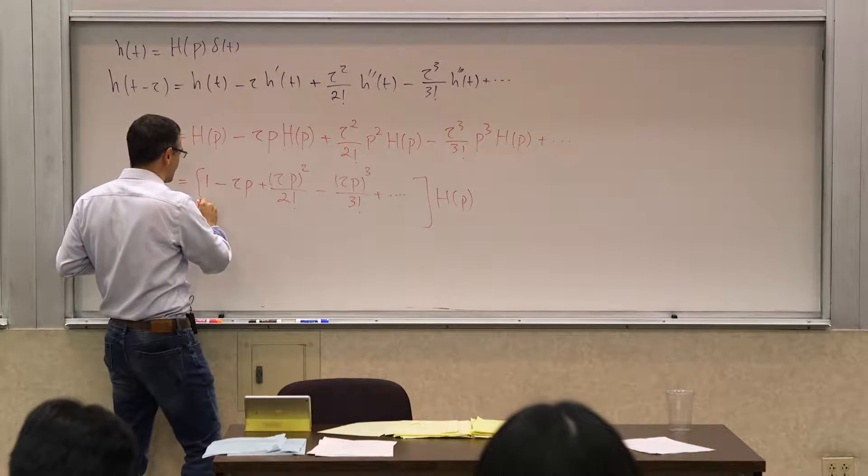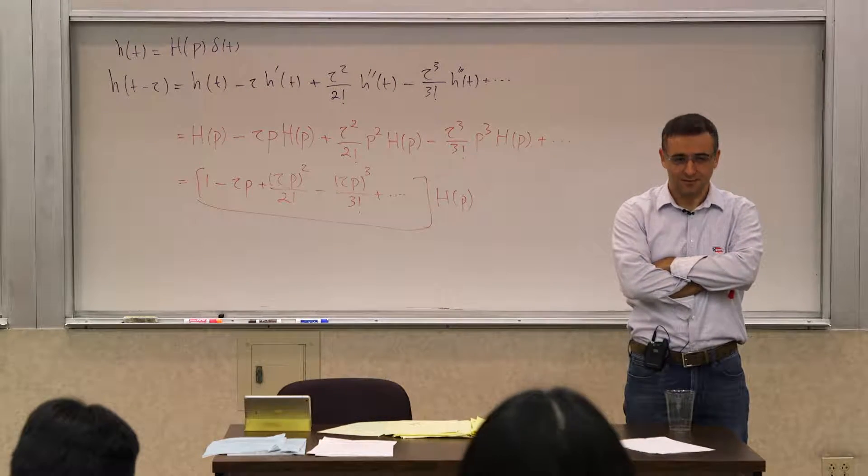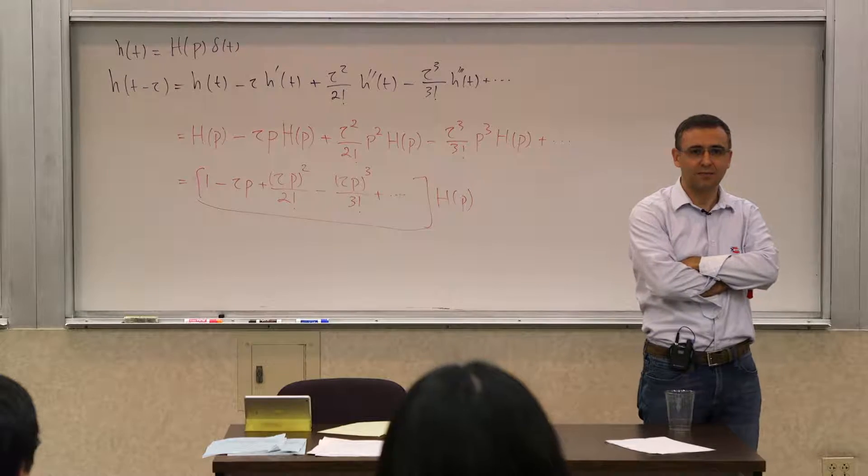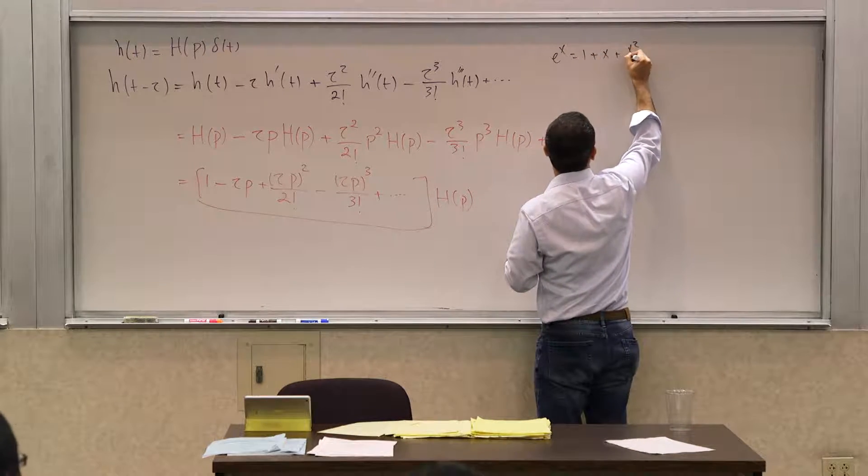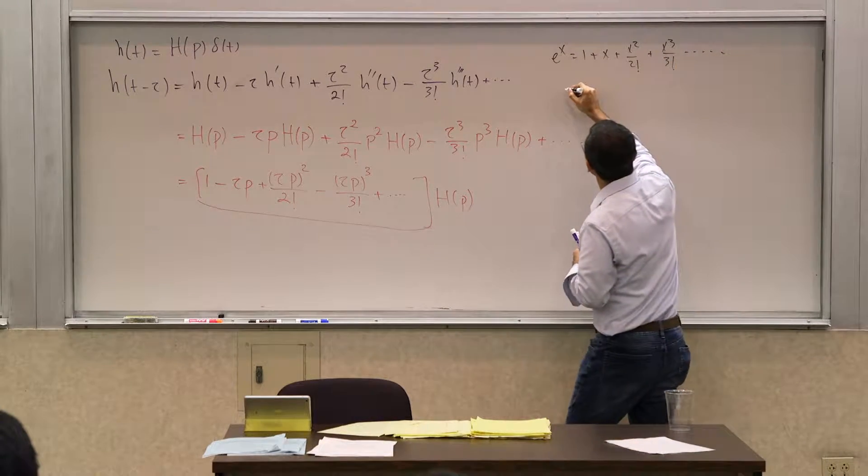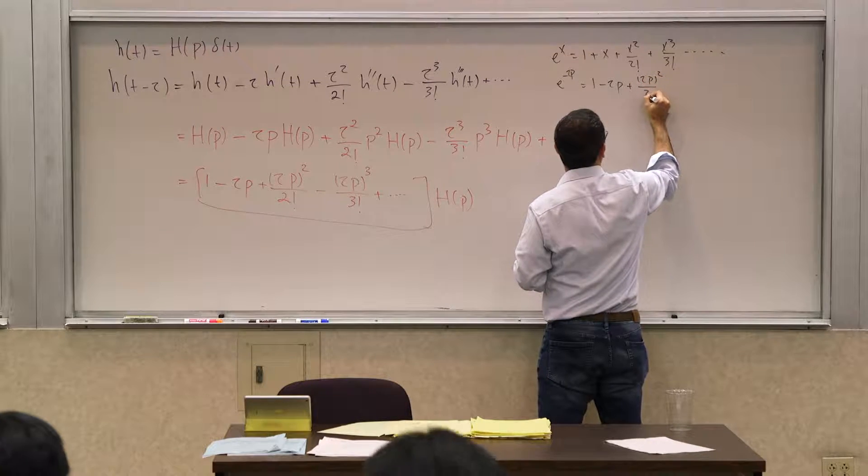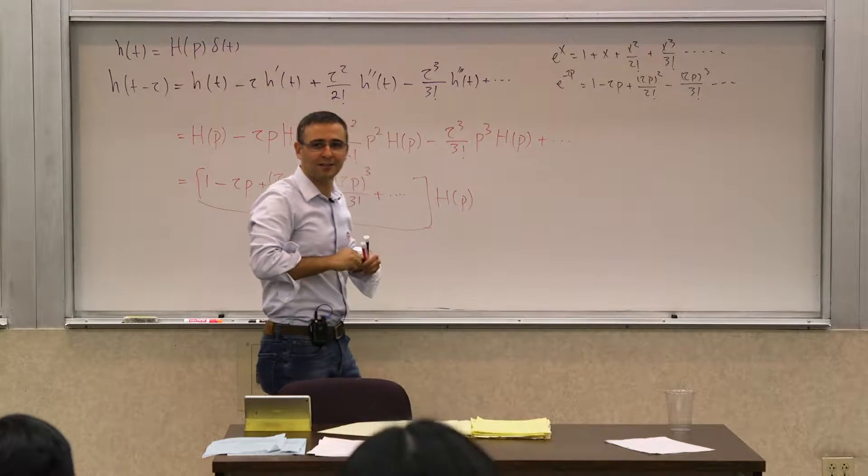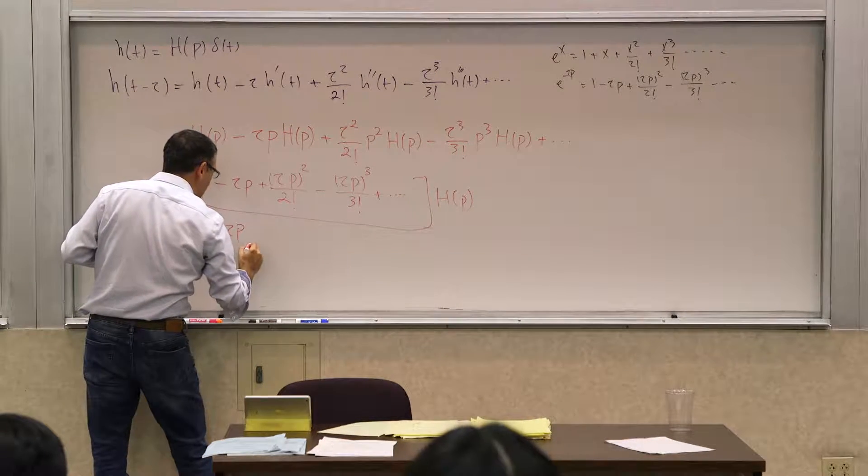So what is this? Does anyone recognize this as something that has a more compact form? E to the negative tau p. Because think about it, e to the x is 1 plus x plus x squared over 2 factorial plus x cubed over 3 factorial, all the way up. So e to the negative tau p is going to be 1 minus tau p plus tau p squared over 2 factorial minus tau p cubed over 3 factorial, all the way up. So this is nothing but e to the negative tau p, h of p.